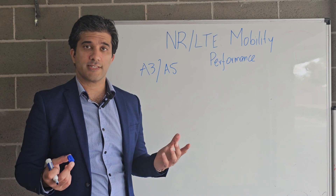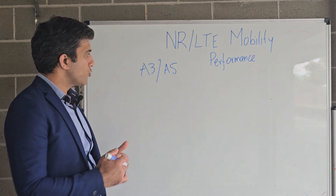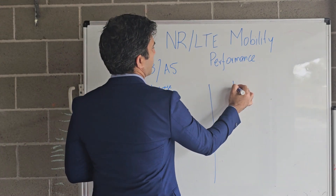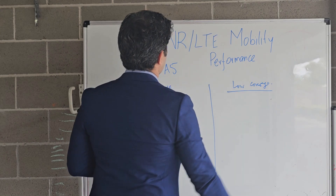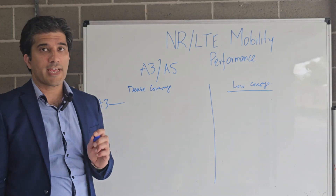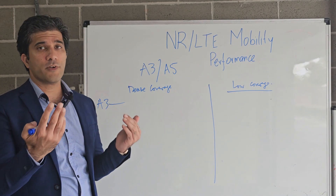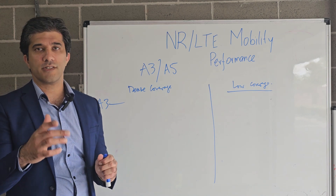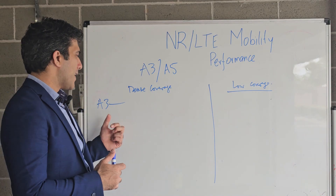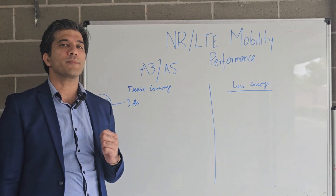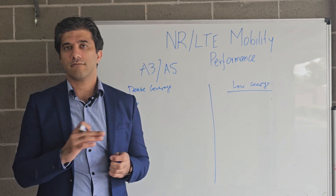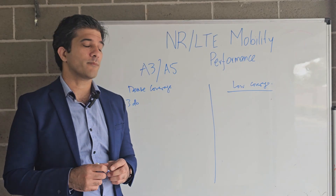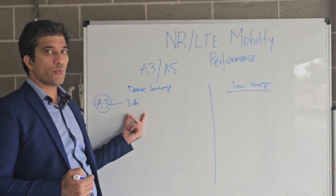Let's focus on two types of scenarios: dense coverage and low coverage. In A3 handover, what we do is look at a delta difference. For example, we have a source cell where we are receiving -115 dBm, and we have a target cell with a delta difference of 3 dB, 5 dB, or 6 dB. We can set the A3 threshold as 3 dB. With A3 handover, if the target cell is 3 dB better, a handover will be triggered — based on the time to trigger and any hysteresis that applies.